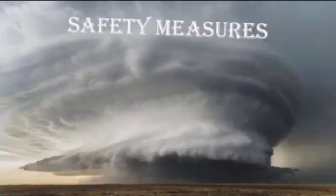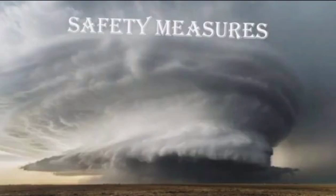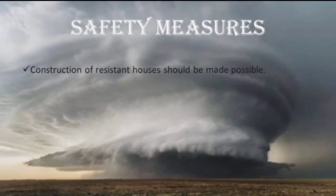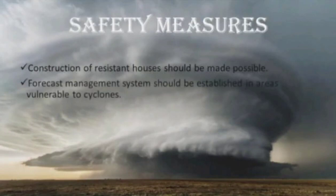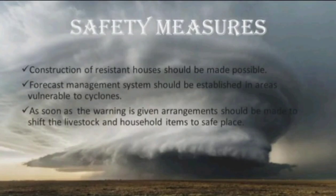Effective Safety Measures Against Cyclones: The following safety measures should be taken by the government for people living in cyclone-prone coastal areas to prevent cyclone-related disasters. Construction of resistant houses should be made possible. A forecast management system should be established in areas vulnerable to cyclones.